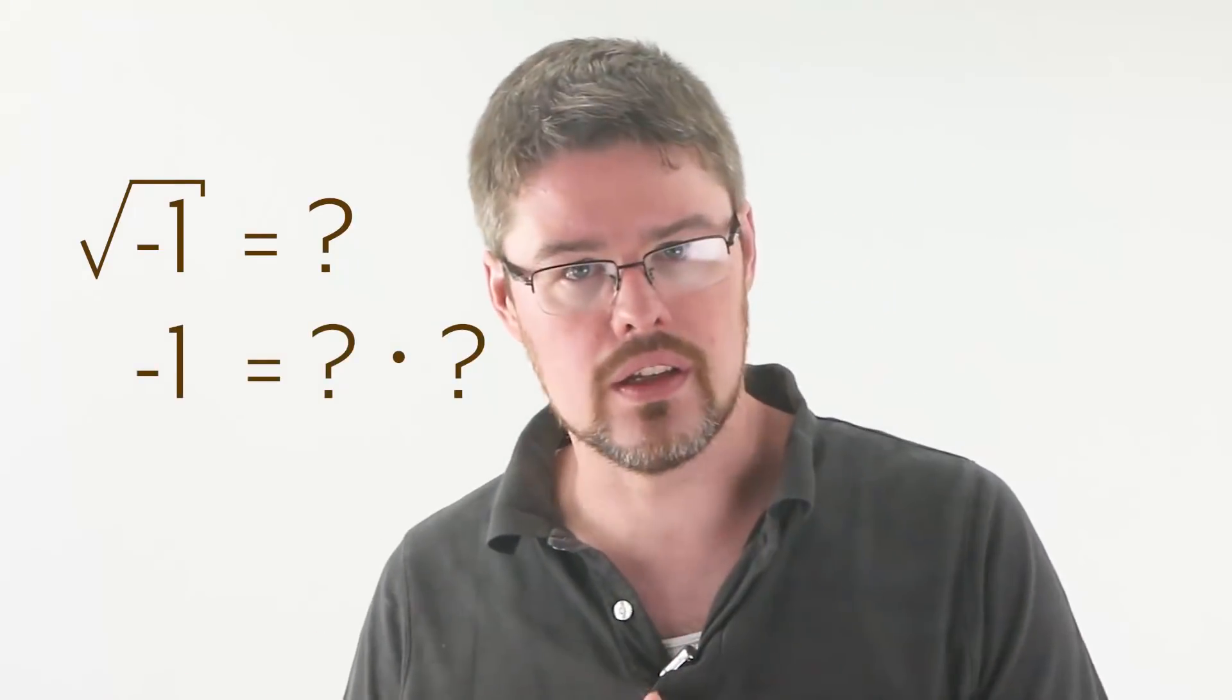So why is there a problem with the square root of negative one? Well, let's ask the question like we just did. What times itself gives you negative one? The problem is that there is not an answer to this question. It's not that it's just some decimal we can't write down in its entirety. Nothing multiplied by itself gives you negative one. Let's see why.